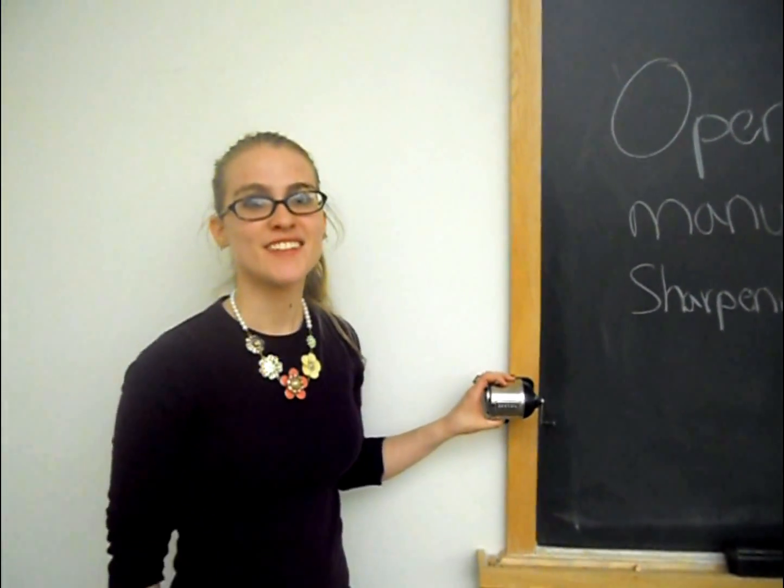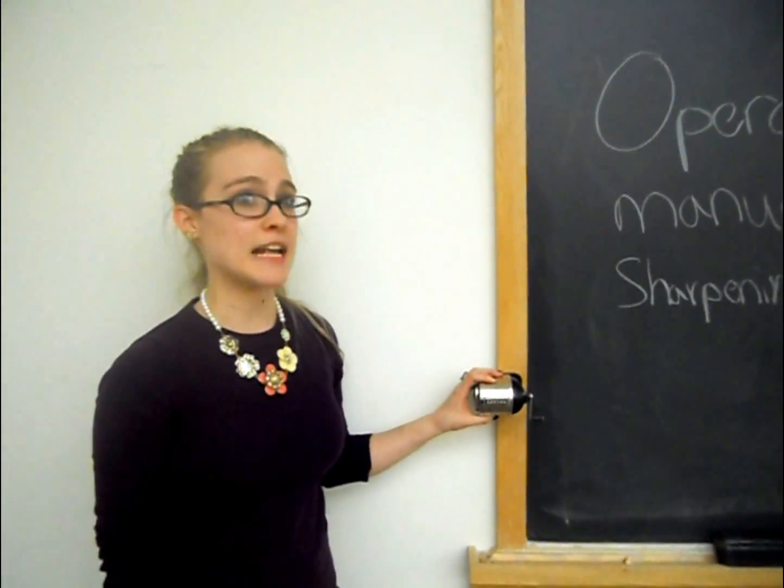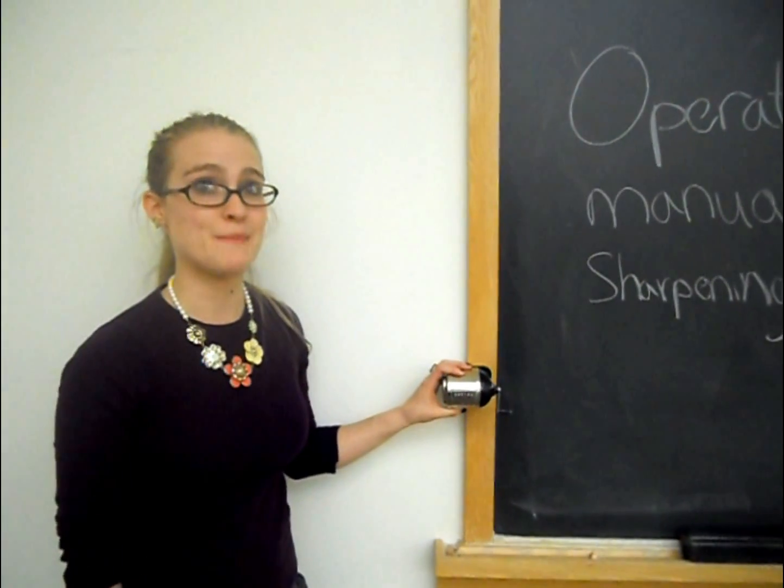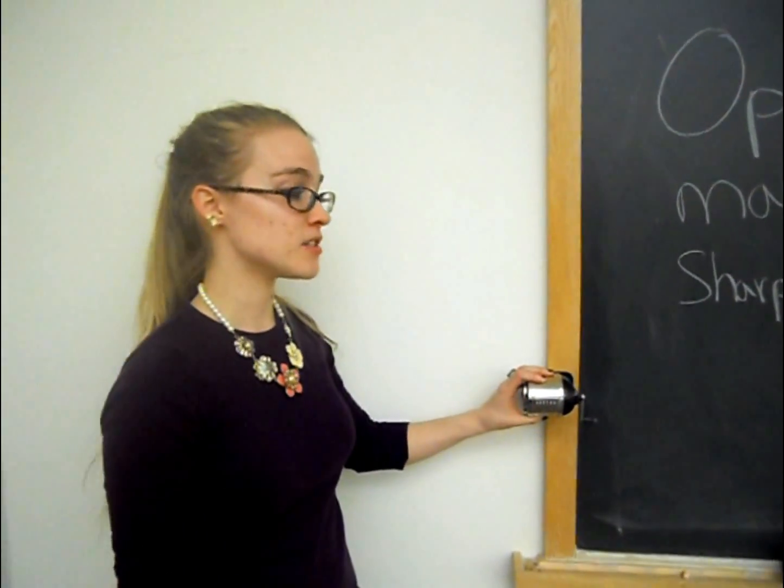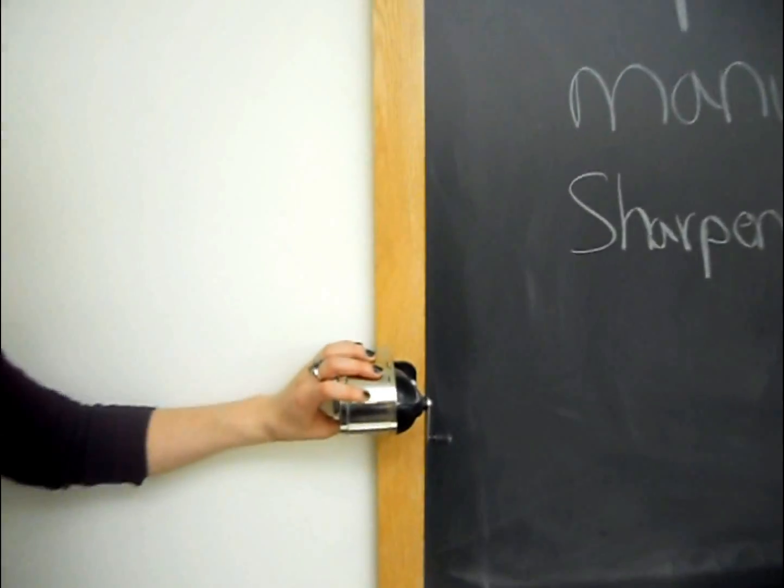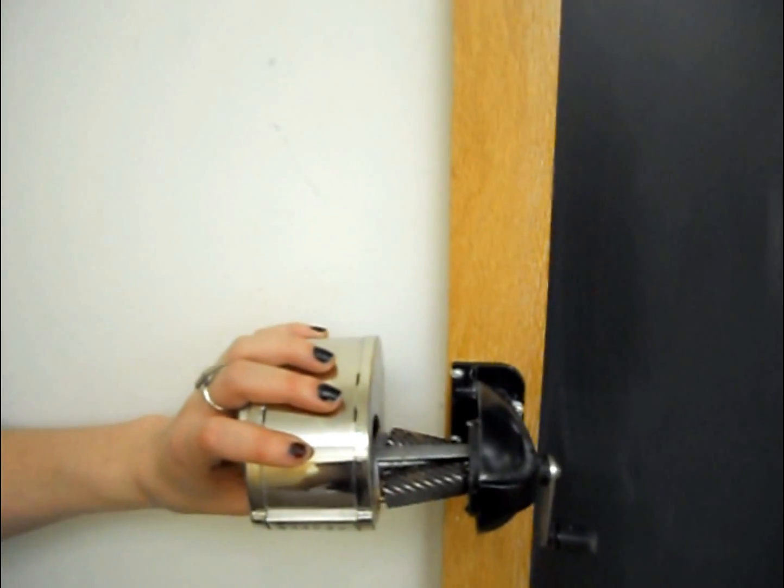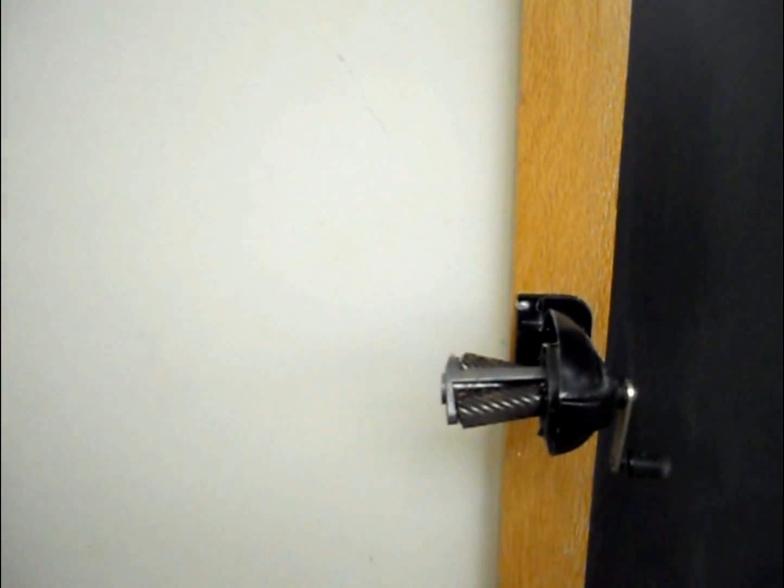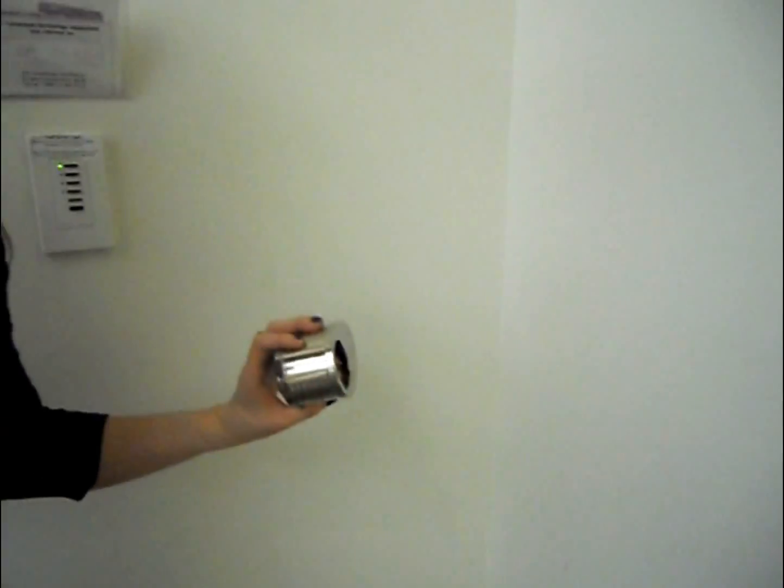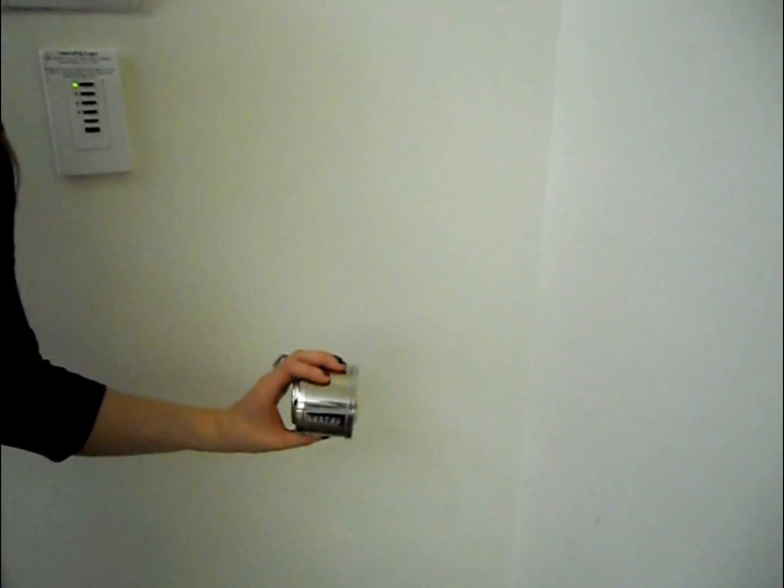The first step in removing the obstruction is by grasping the waste collection chamber in your hand and rotating it towards yourself, slowly moving it horizontally away from the sharpening device. The next step is to empty the contents of the waste collection chamber.